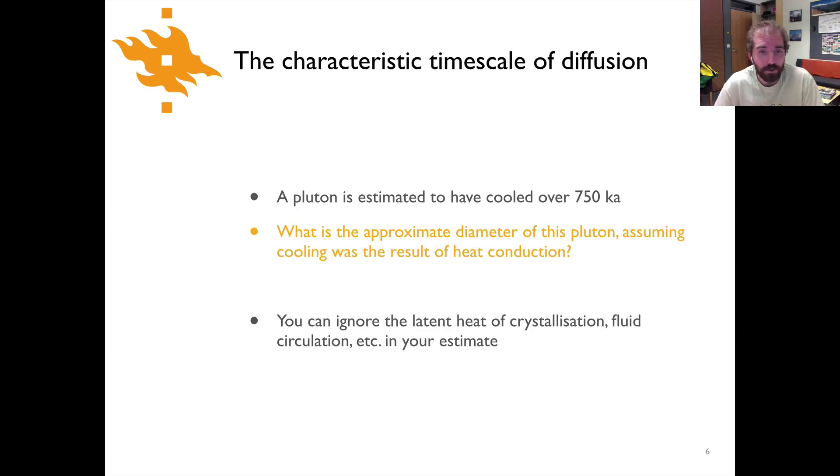Now you have an opportunity to test out your understanding, get a sense of how this characteristic time equation works. The first case we'll look at is a pluton that's estimated to have cooled over 750,000 years. So this is a case where we know the characteristic time, or approximately the characteristic time. The question for you is, what is the approximate diameter of this pluton if we assume that cooling was the result of heat conduction? I'll pause the video here to give you the opportunity to pause and come back when you have a solution.